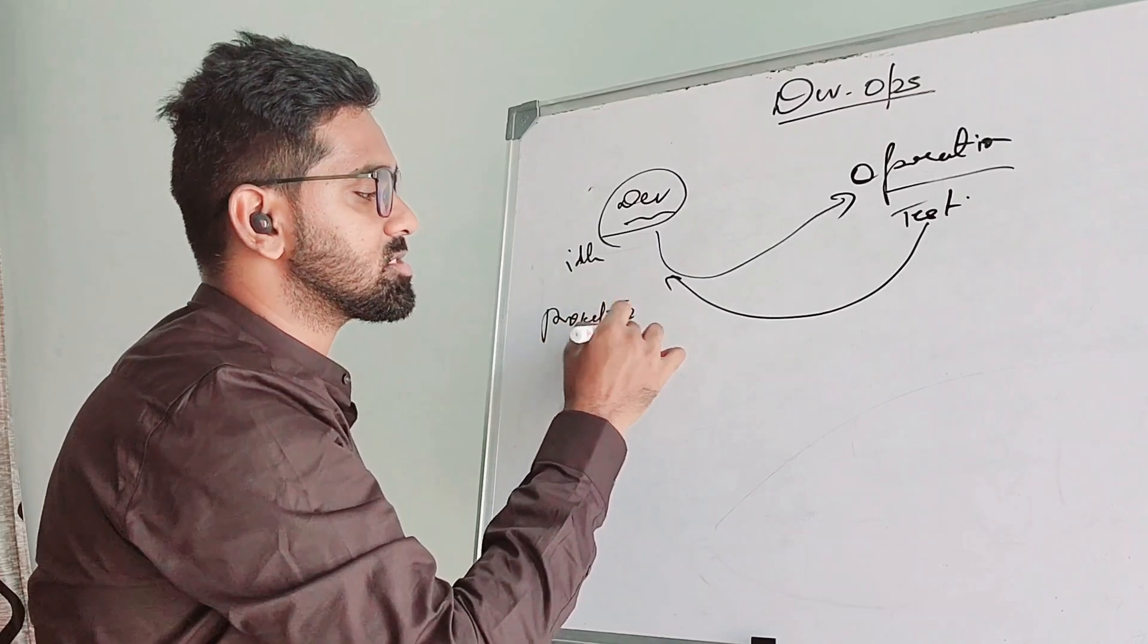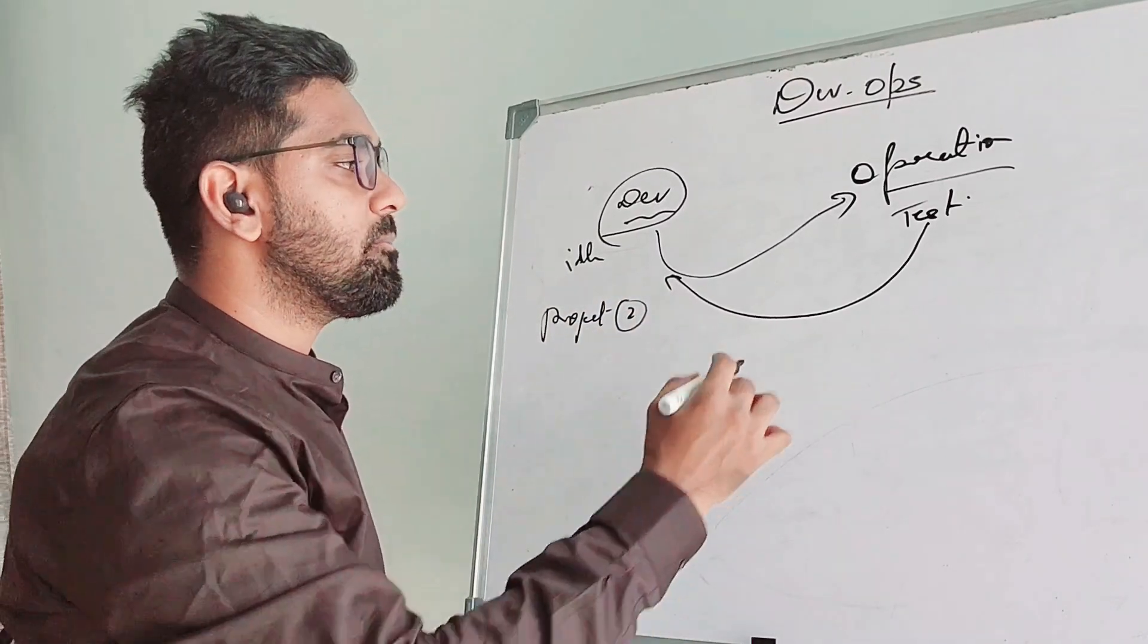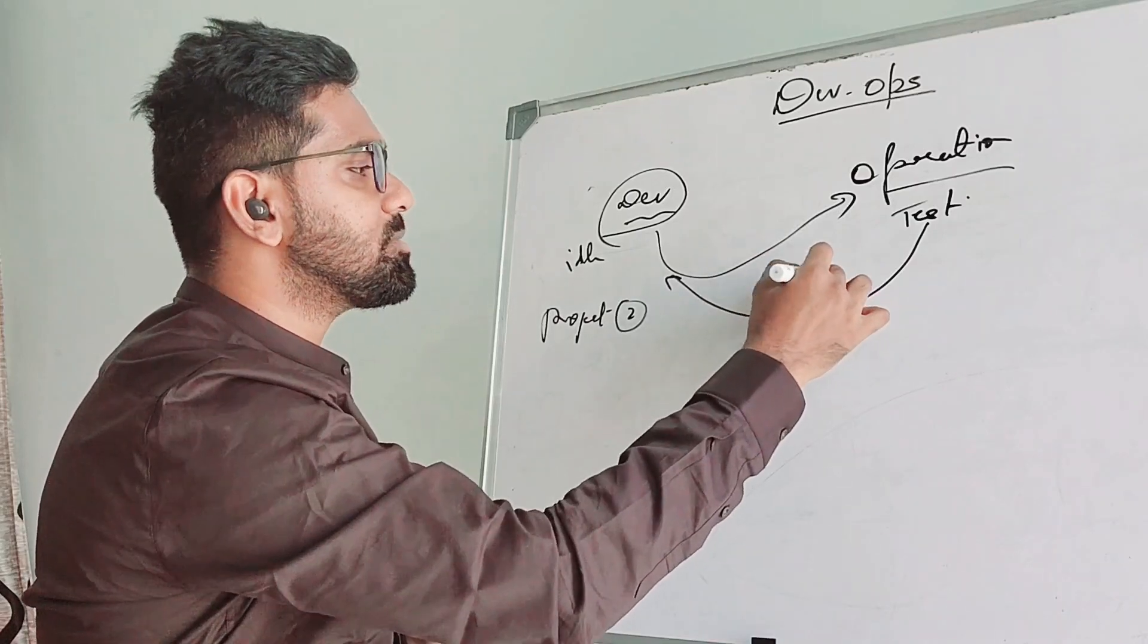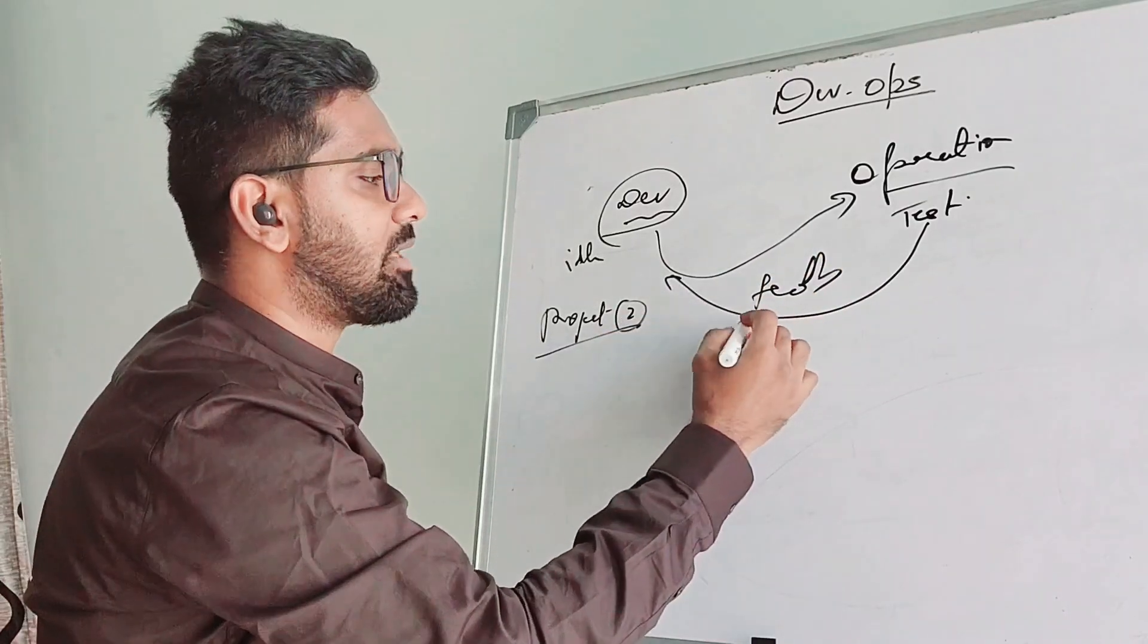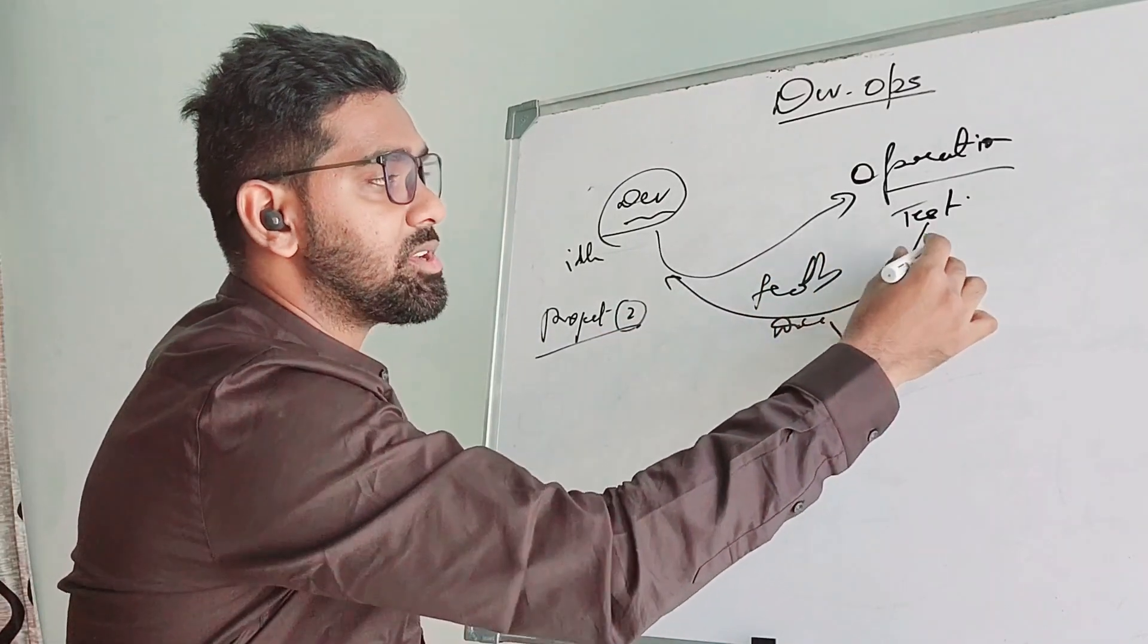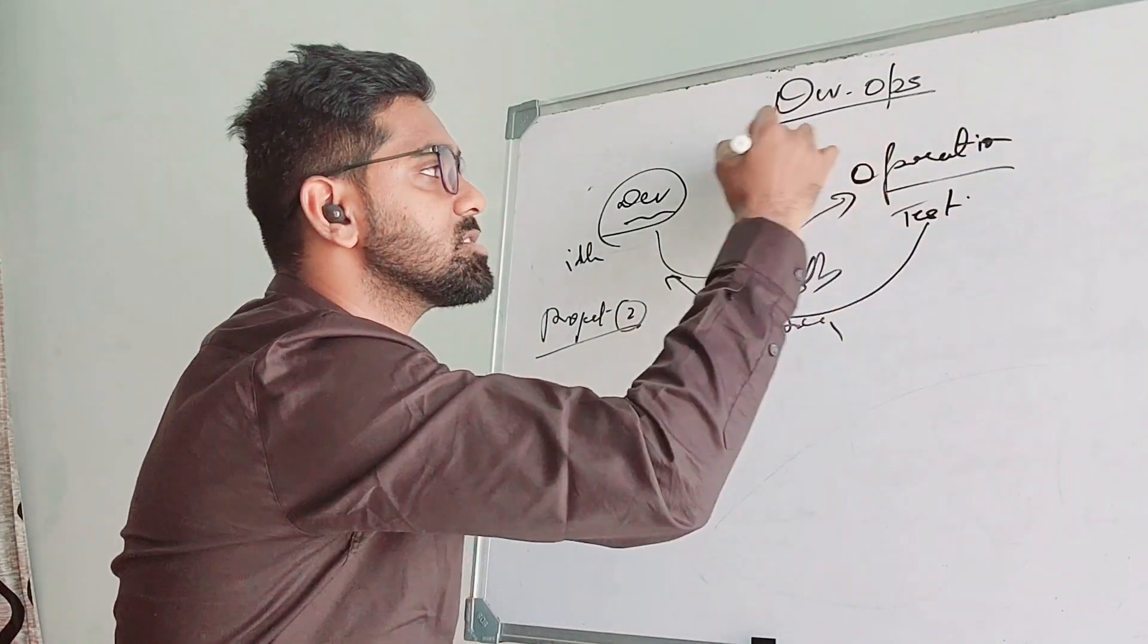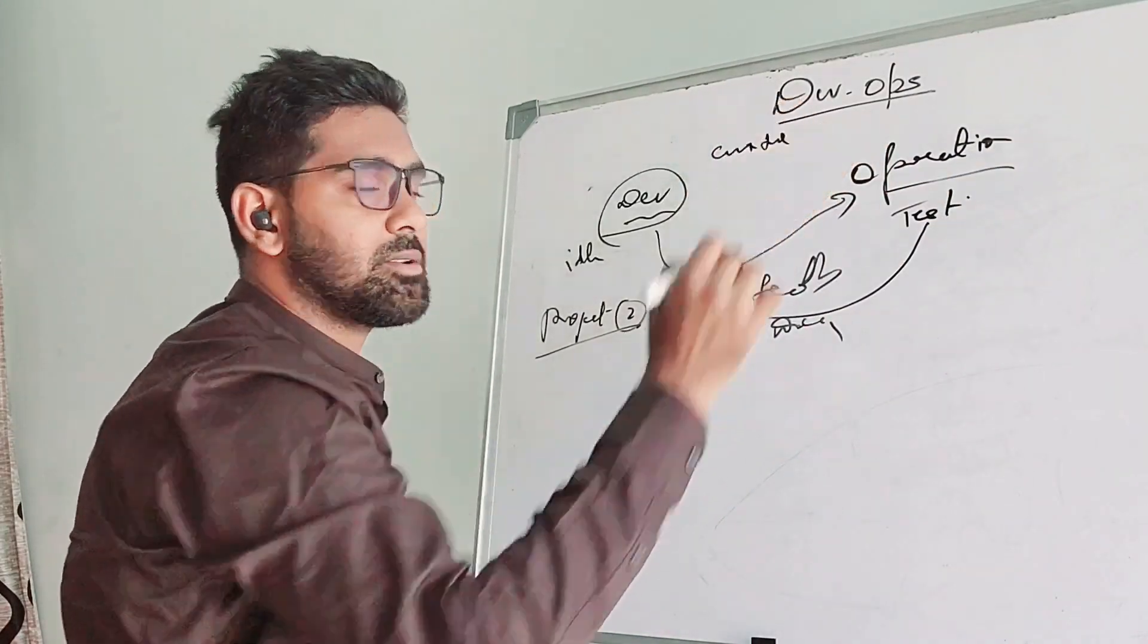Until these people come back with the feedback, these people have already moved to project 2 and there is a delay here. The reason why these people have to provide this feedback is because the customer's requirement has not been met.